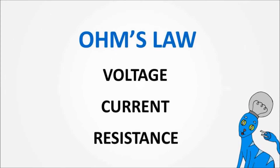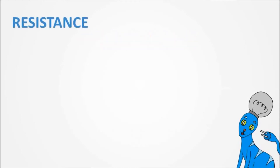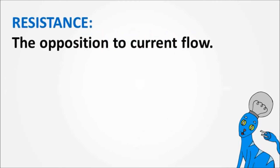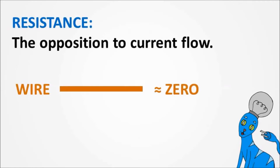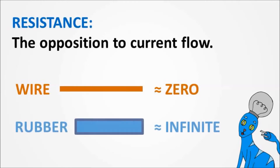First, let's talk about the one we haven't covered yet: resistance. Resistance is the opposition to current flow. Good conductors, like metallic wires, have almost no resistance — electrons can freely flow. Good insulators, like rubber, have almost infinite resistance — electrons cannot flow.